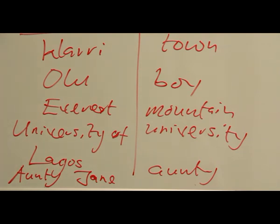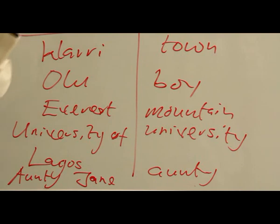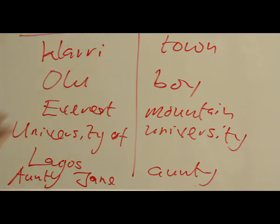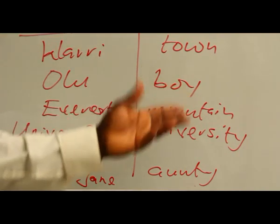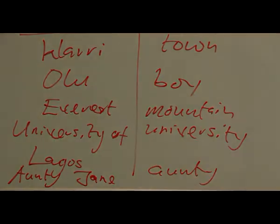So these are the common nouns. They depict general names. We have lawyer, we have town, we have bucket, we have house. We have other ones like boy, mountain, university, auntie, and so on and so forth. Thank you.